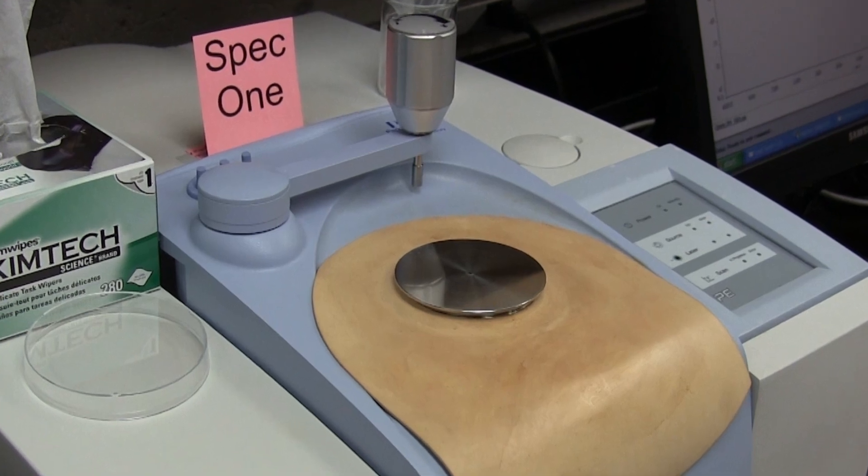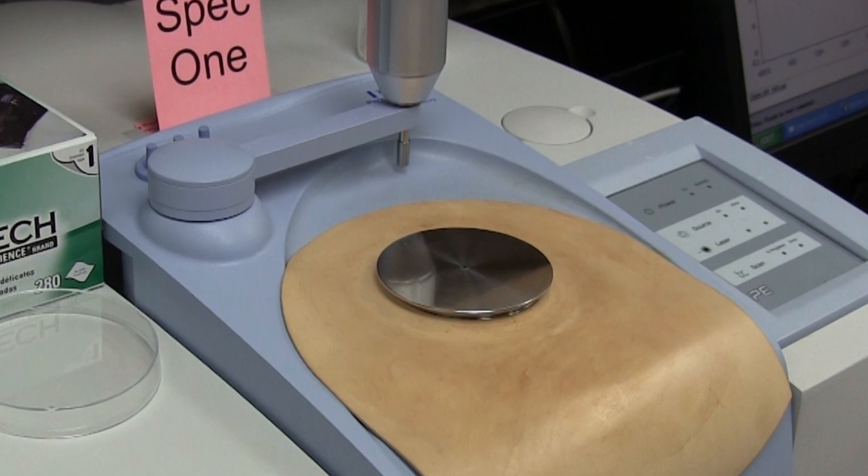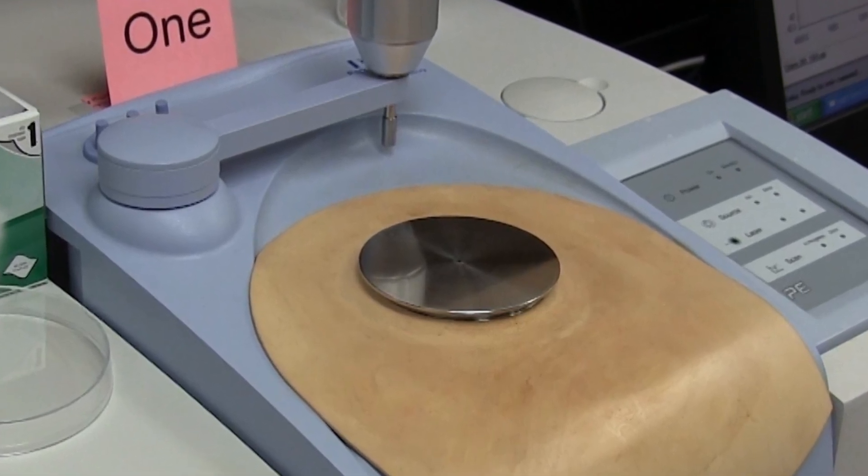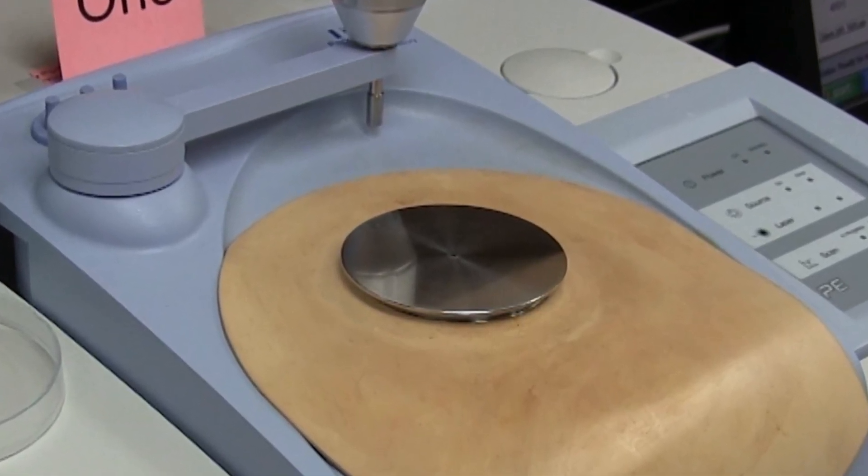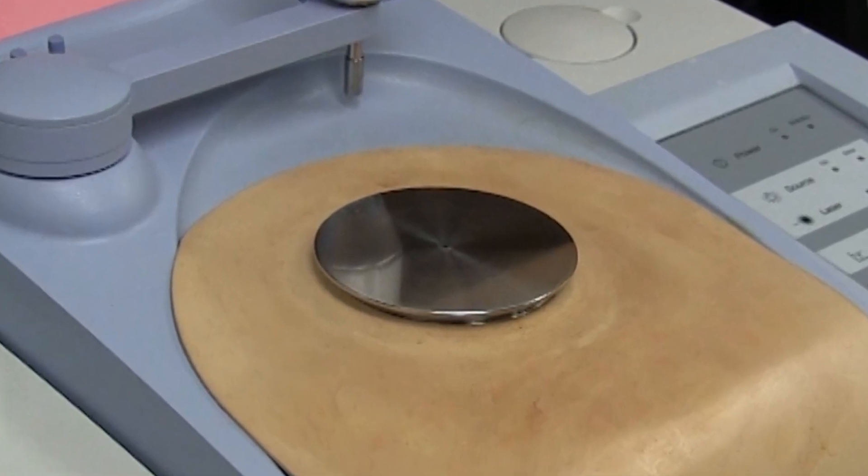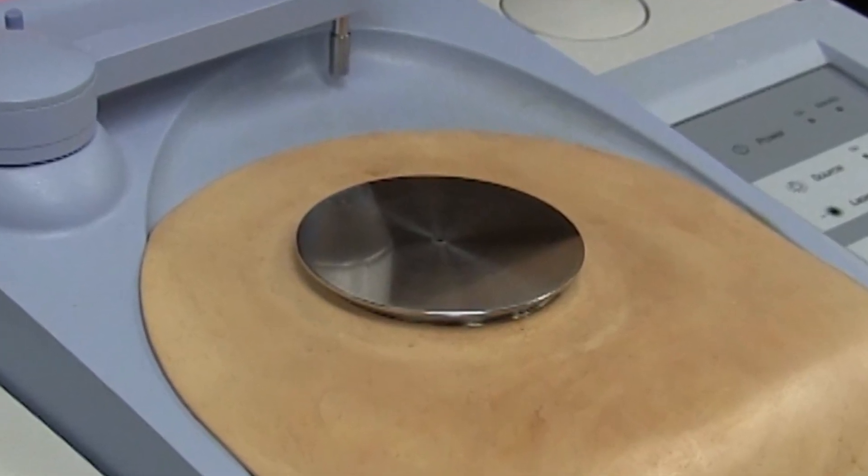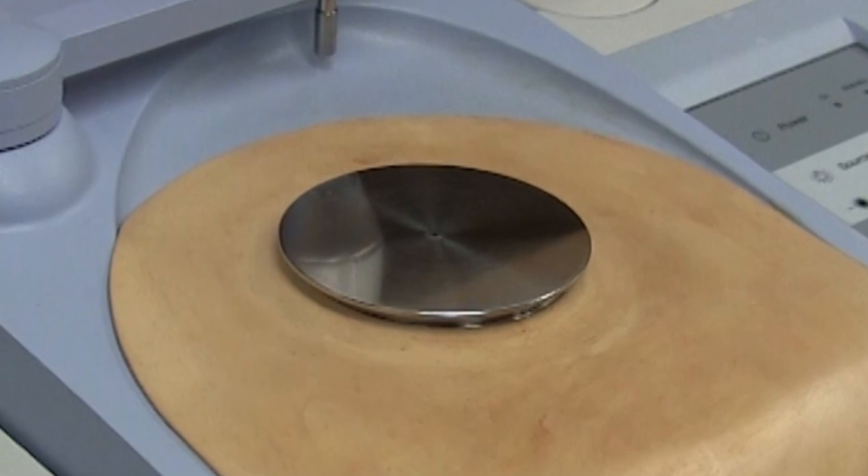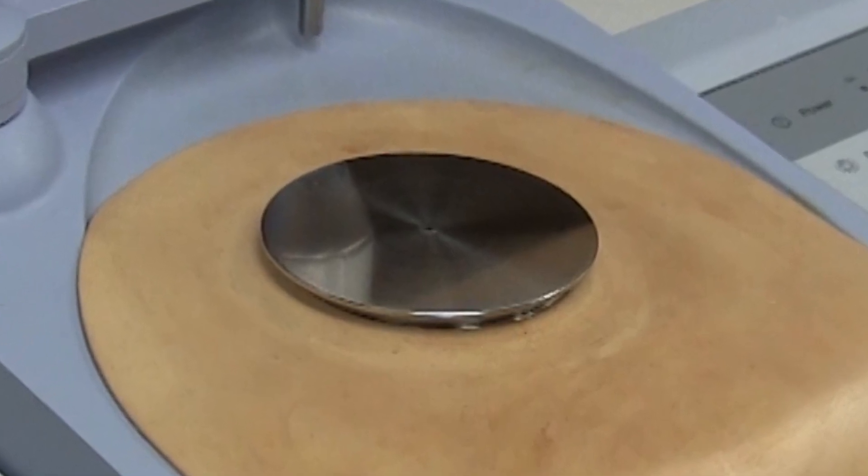The ATR consists of a diamond crystal in the center of this circular mounting plate. The liquid or solid sample is placed over the surface of the crystal, and the IR beam is directed from below into the sample to a depth of only one to two micrometers.